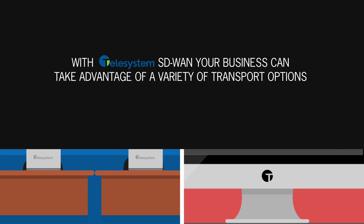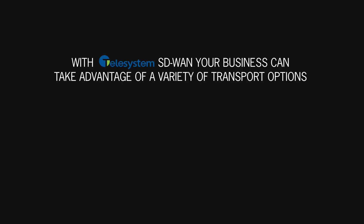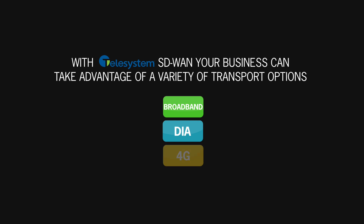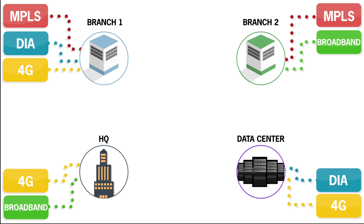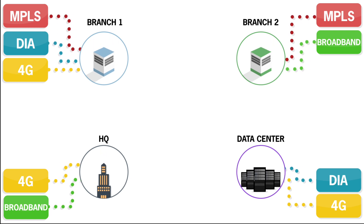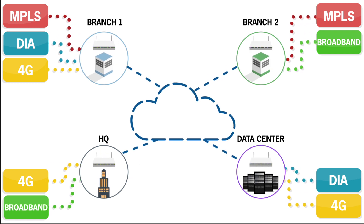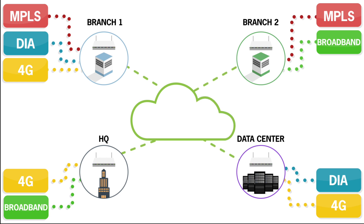With Telesystem SD-WAN, your business can take advantage of a variety of transport options like broadband, DIA — dedicated internet access — or LTE 4G wireless, instead of relying solely on expensive private MPLS connections. Essentially, SD-WAN takes all of your different transport types and converts what used to be disparate individual networks and makes them part of a common encrypted network managed by software.